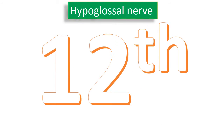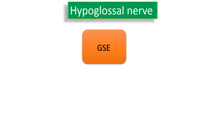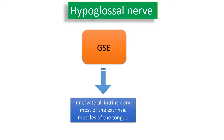The hypoglossal nerve is the 12th cranial nerve located below the tongue — that's why it is called hypoglossal. The fibre component of it includes general somatic efferent. It supplies all intrinsic and most of the extrinsic muscles of the tongue.